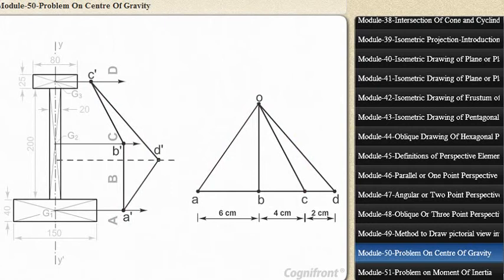Through D', draw a line parallel to the lines of action to intersect the axis YY' at point G. This line is the line of action of the resultant R of the forces, and G is the center of gravity of the section.